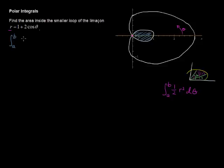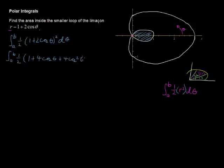From a to b, ½ times (1 + 2cos(θ))² because we're using this formula here, dθ. Now let's multiply that out, and you get from a to b of ½(1 + 4cos(θ) + 4cos²(θ)) dθ.